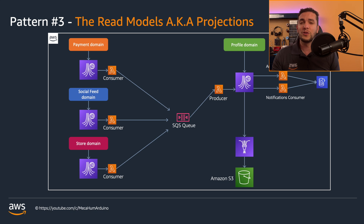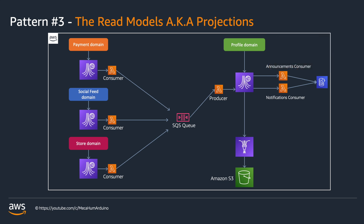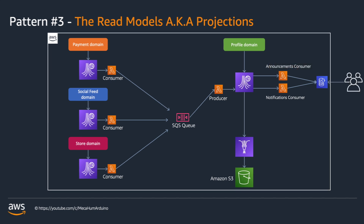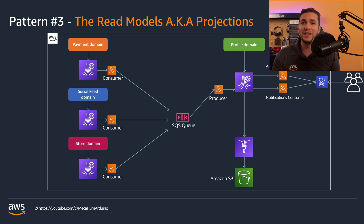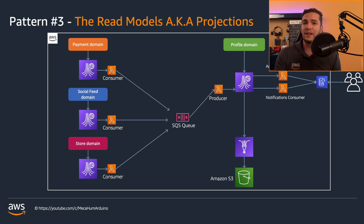To populate the user's landing page, the front-end client gets to do one call to the corresponding DynamoDB table and fetch all the information pre-calculated, pre-formatted, and ready to be displayed. In favor of lightning-fast reading, we shifted the heavy lifting towards the writing side.